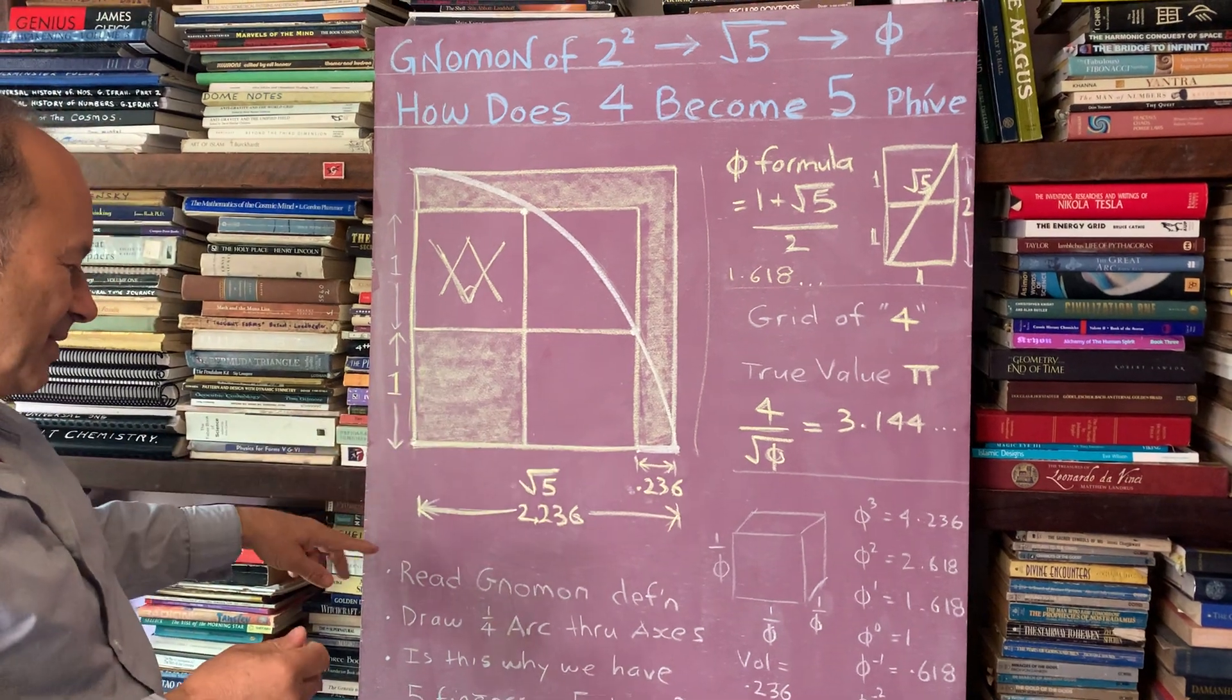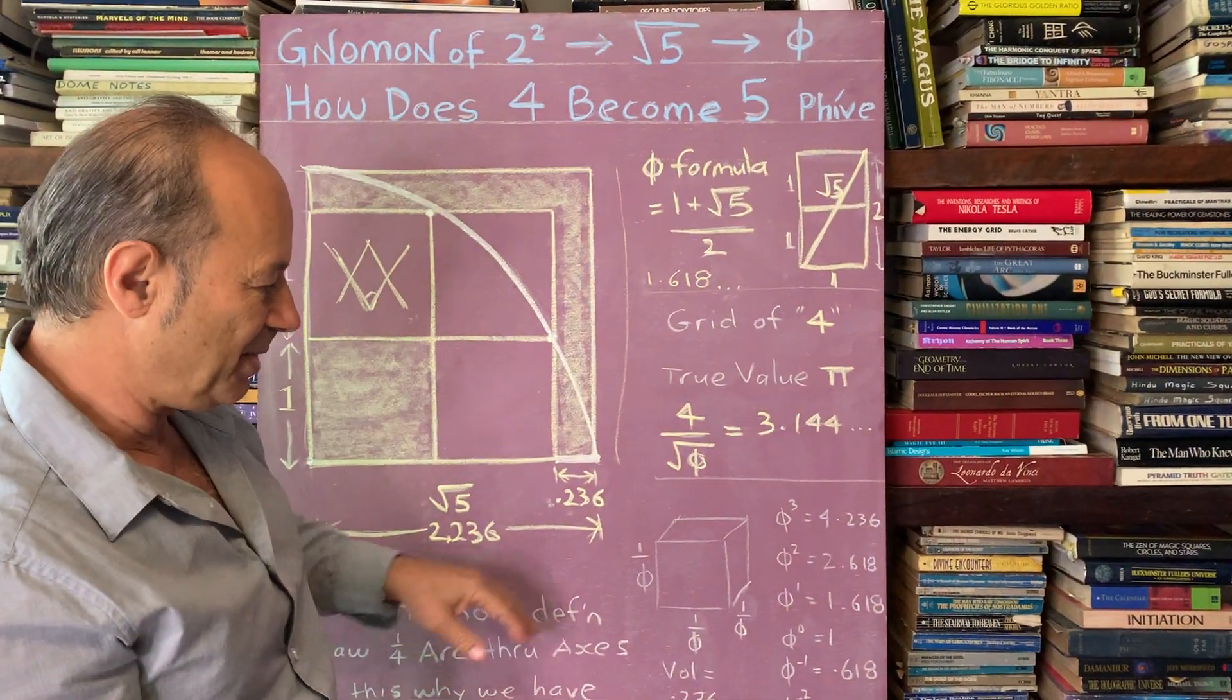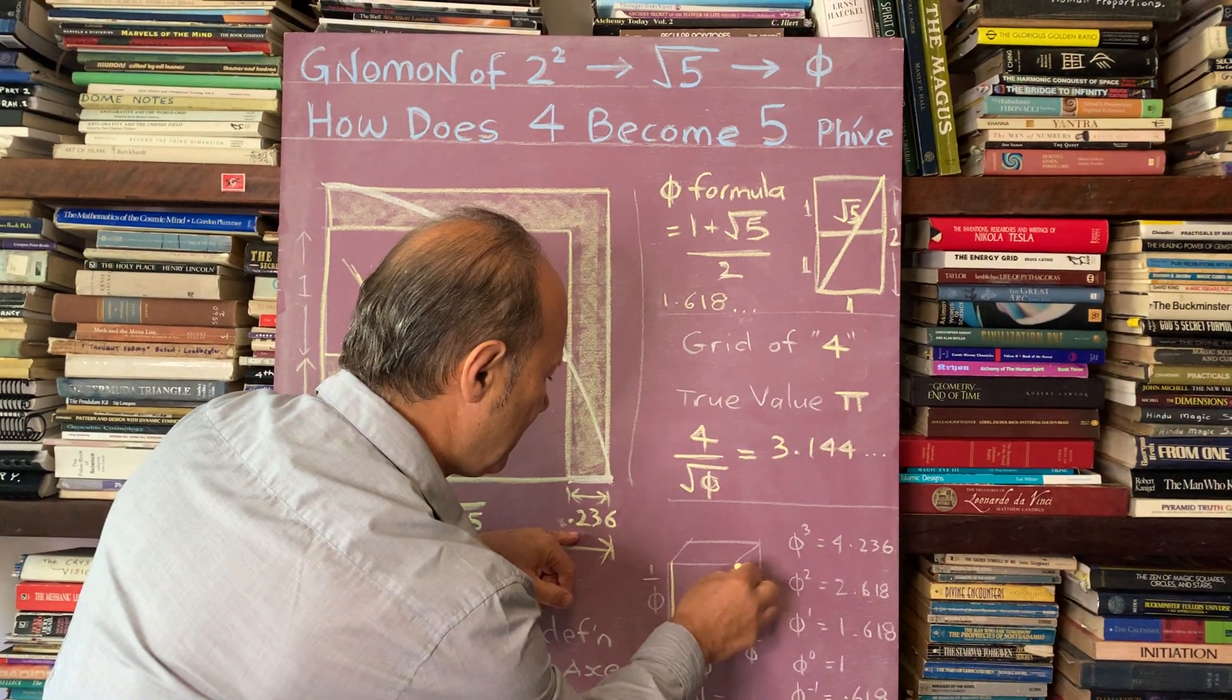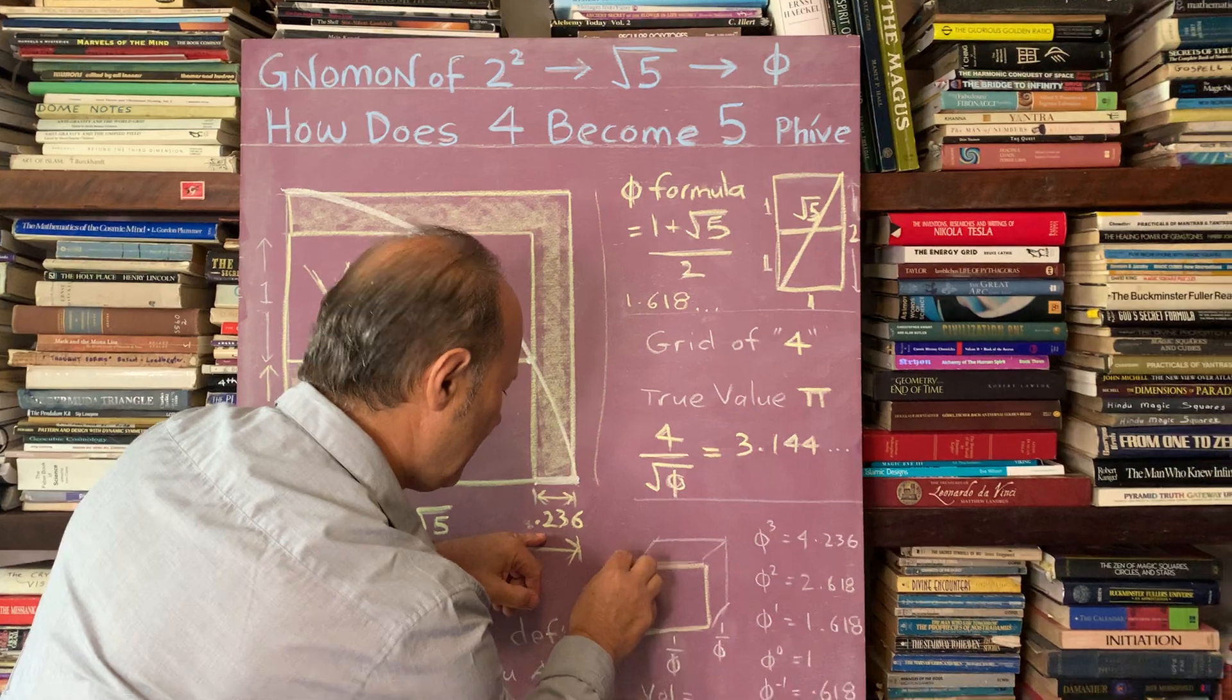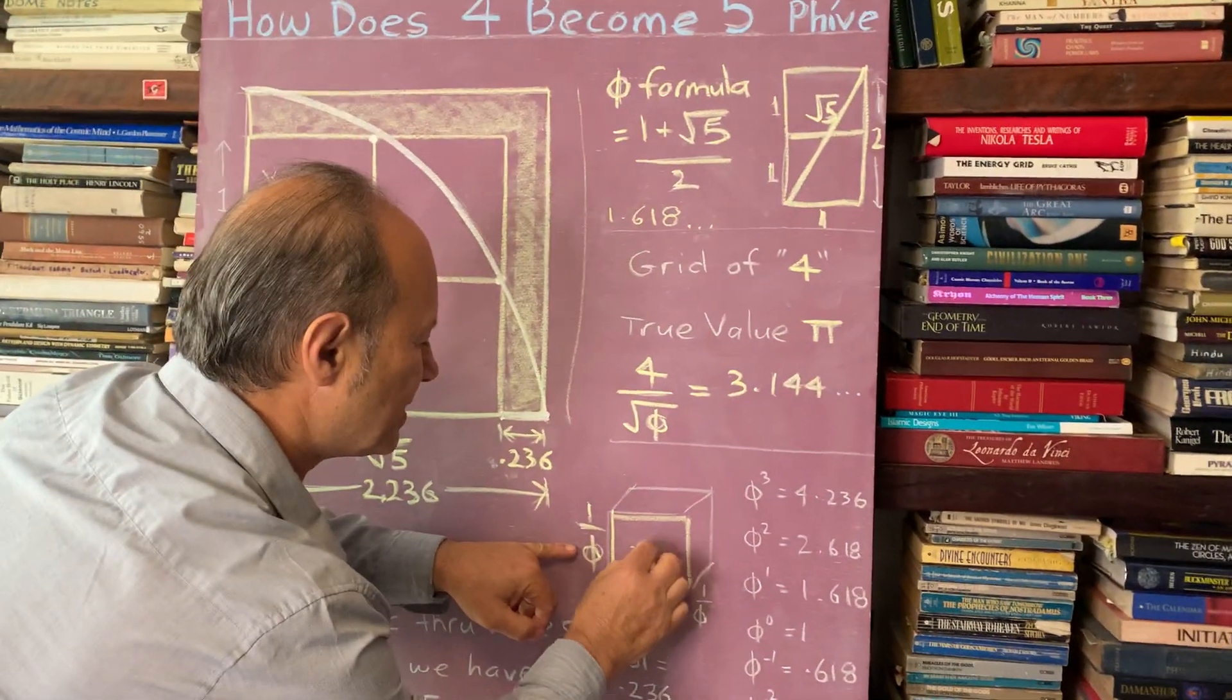I want to read to you what a gnomon is, but just quickly, if you took 1 on phi, the reciprocal of phi here, and made it into a cube. So 1 on phi is called 0.618. So 0.618 times 0.618 times 0.618, the x, y, and z-axis.